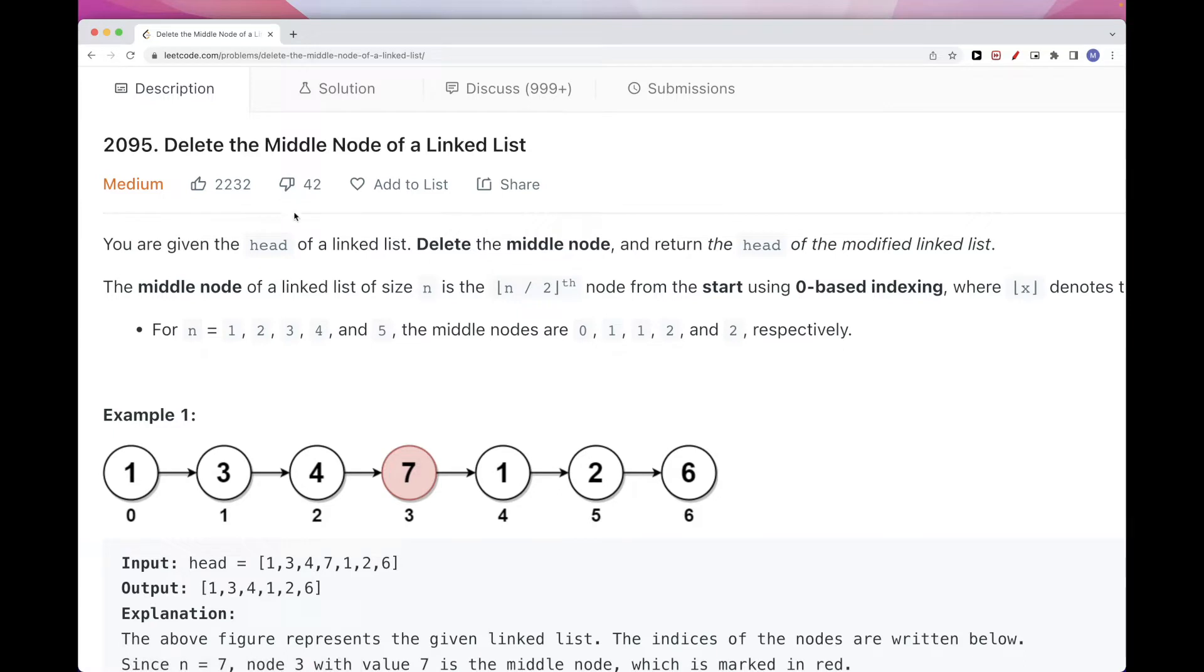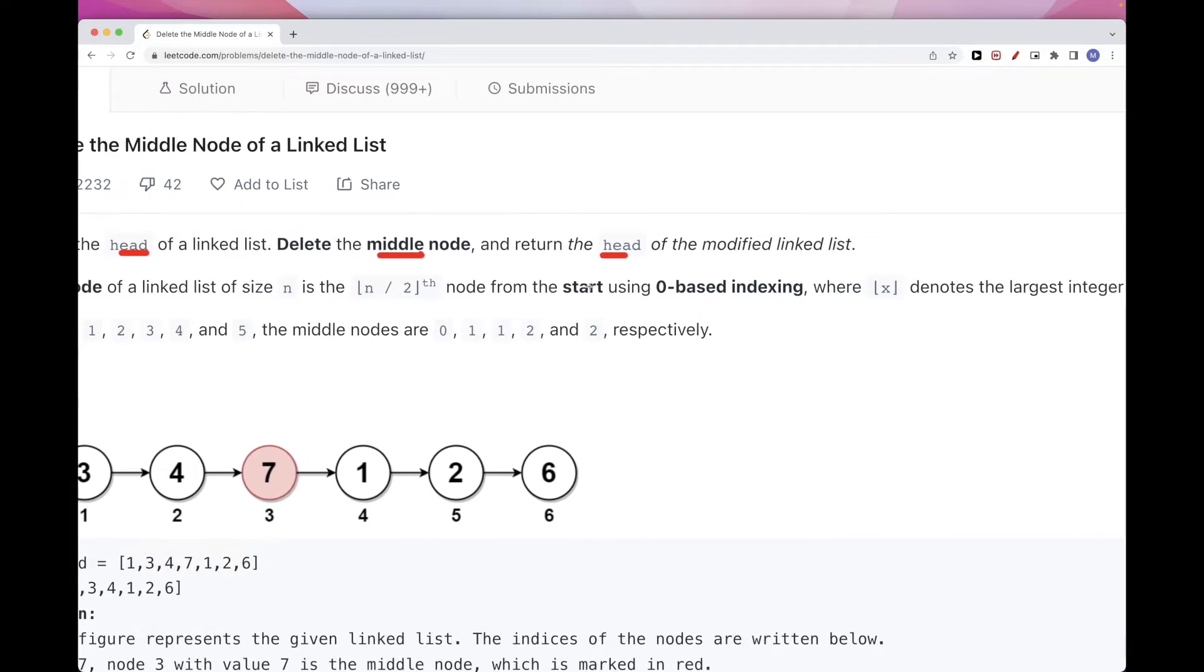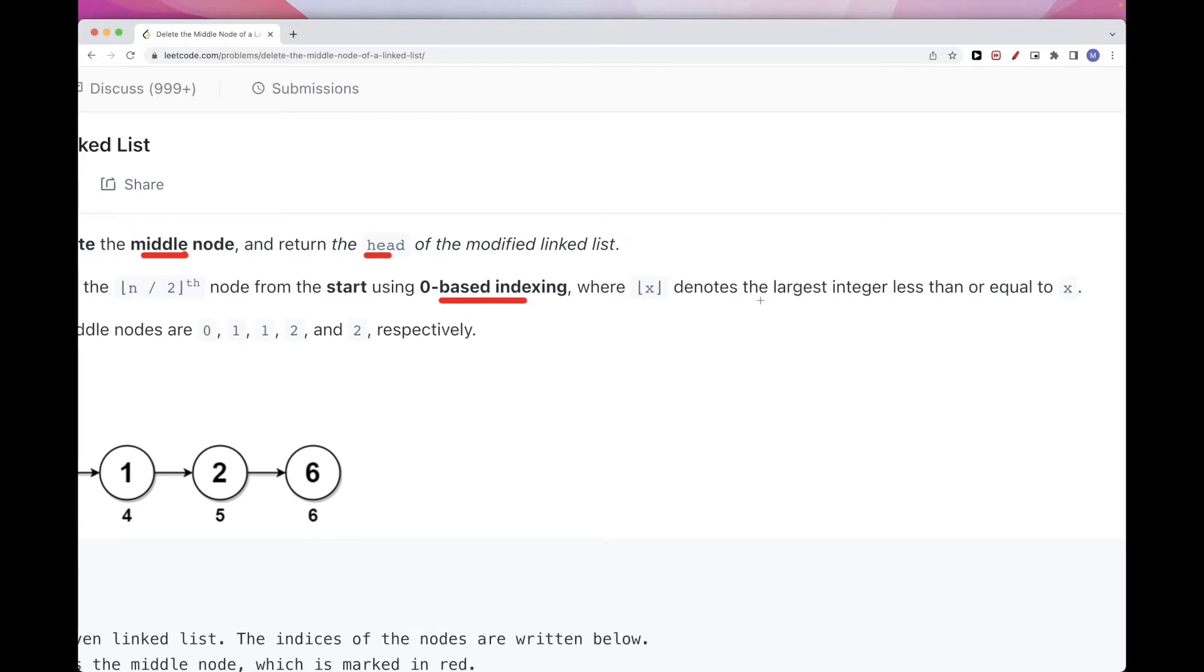So we get the head of the linked list and we want to delete the middle node and return the head of the linked list after we modified it by deleting this middle node. And the middle node is basically the floor of n divided by 2 from the start, using zero indexing. And they just define the floor here, which is the largest integer less than or equal to x.